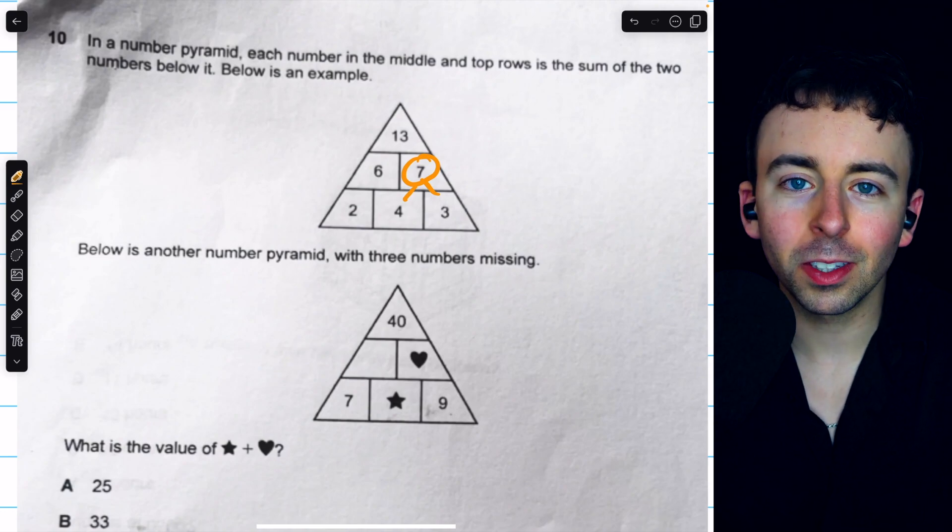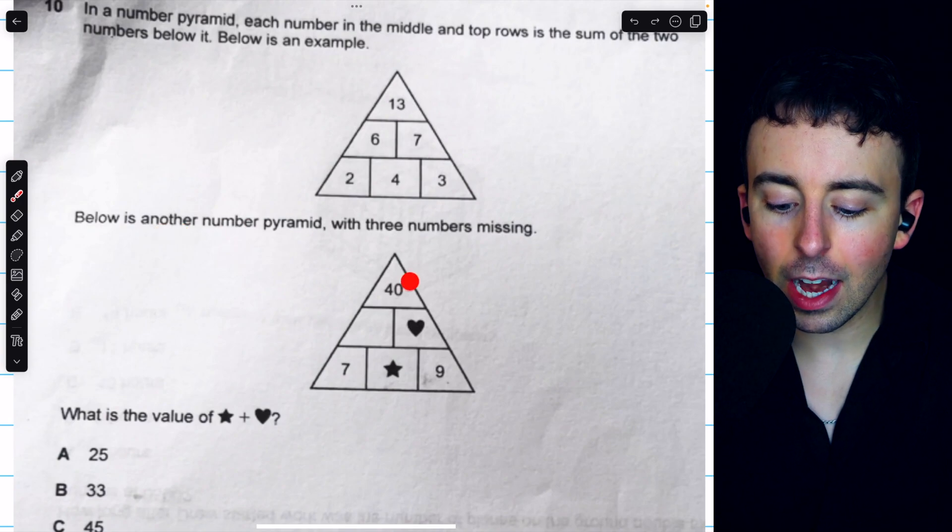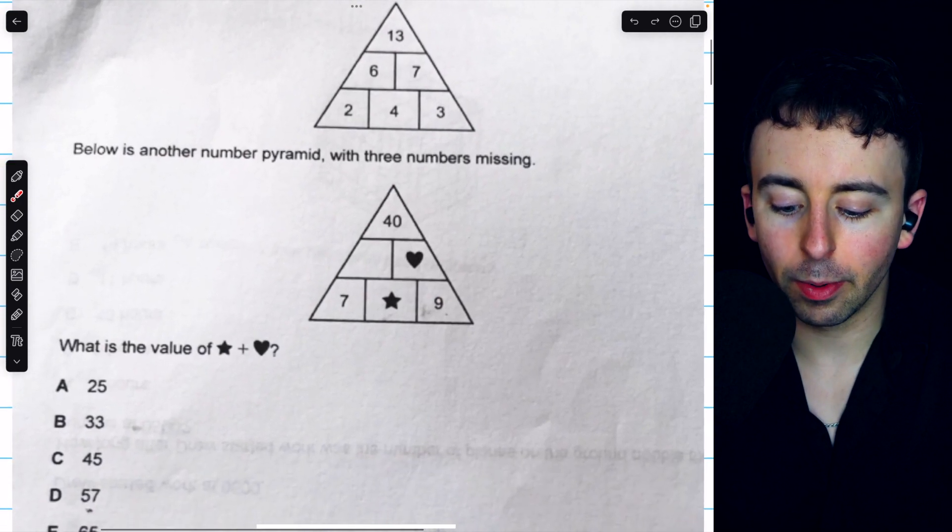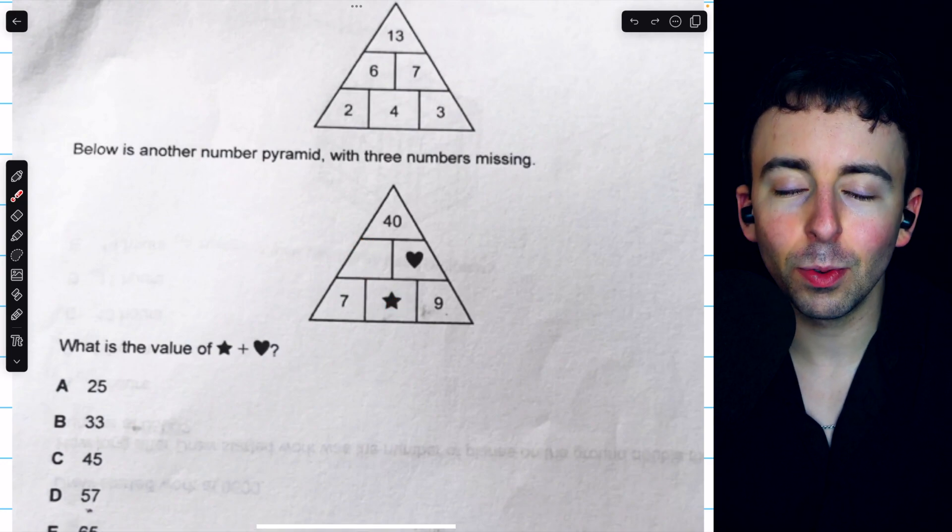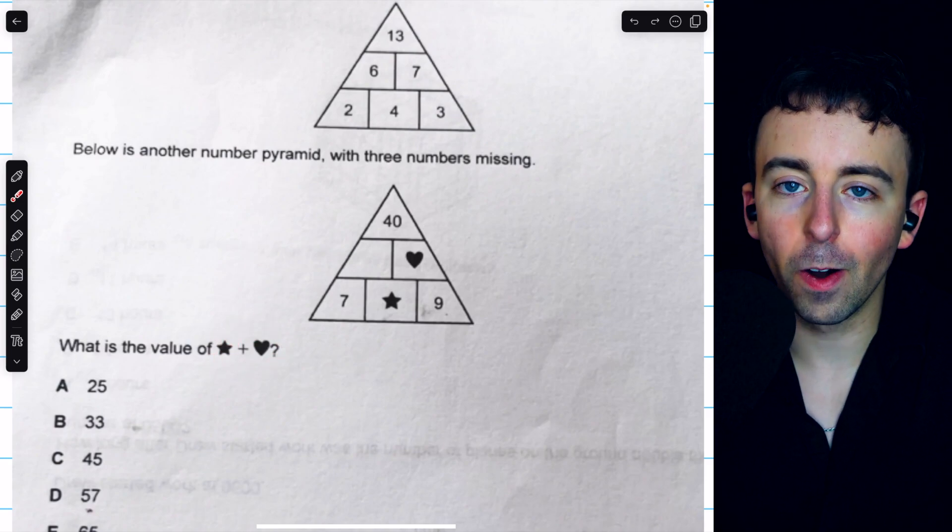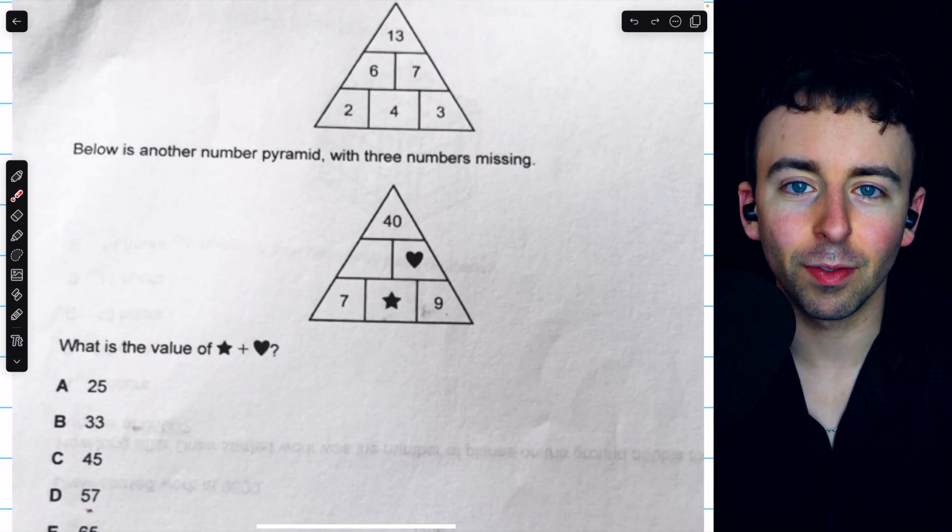If you know Pascal's triangle, this feels pretty similar. So then the problem is that we're given another number pyramid with three of the numbers missing. One of them has been named heart, one is named star, and the other one I guess we can name whatever we like. The problem is to find the value of star plus heart. So let's use what we know in this problem and find this value.